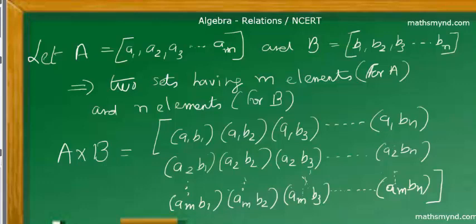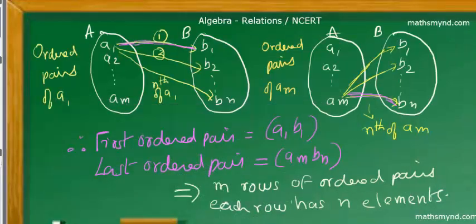The Cartesian product A × B starts from the first ordered pair — the first element of A pairing with the first element of B, written as (a₁, b₁), and it continues. The first element a₁ pairs with the last element of set B, giving (a₁, bₙ). As the procedure continues, we reach the last ordered pair of the entire series, which is the last element of A pairing with the last element of B, written as (a_m, bₙ).